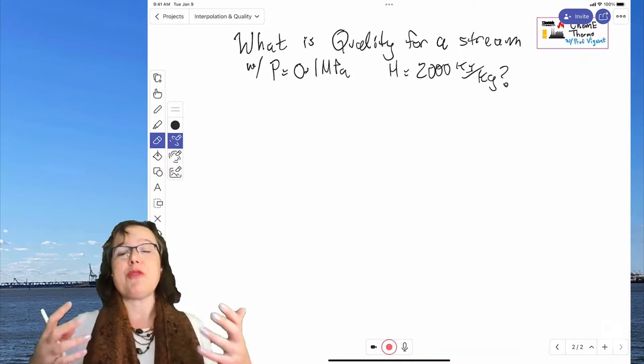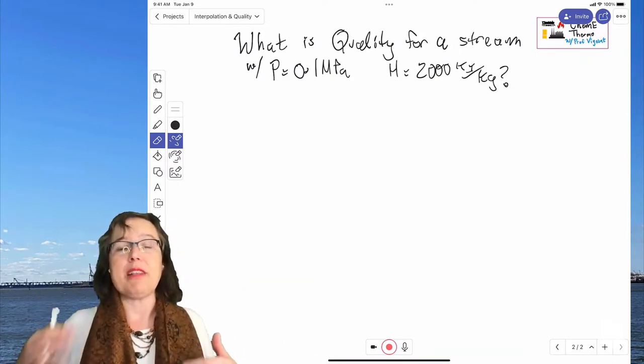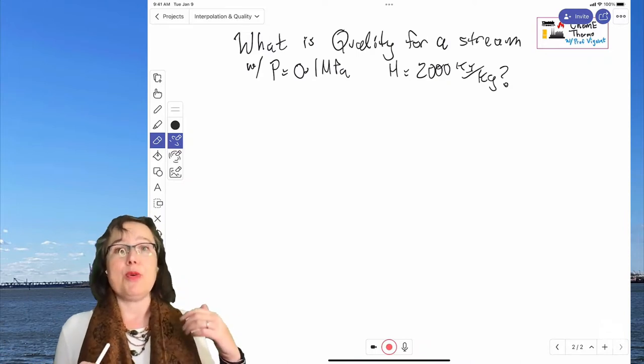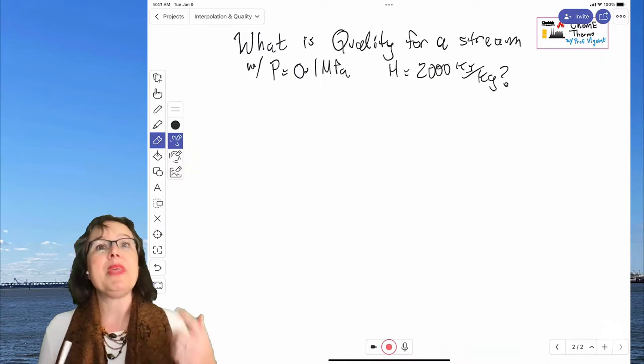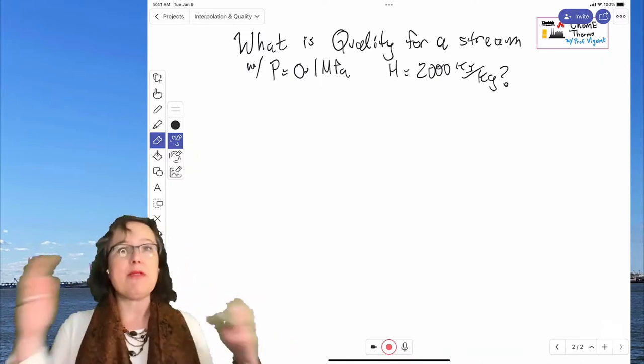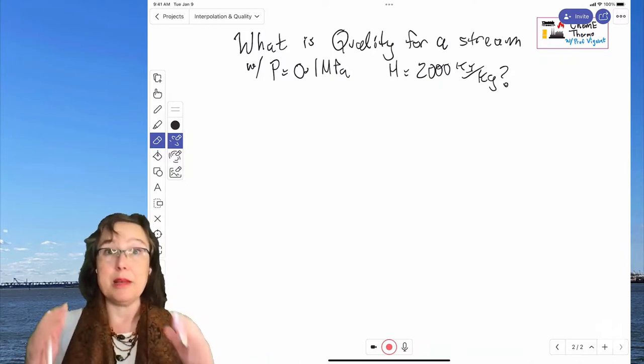So if you have saturated liquid water, it is a quality of zero. And if you have 100% steam, like in our last little problem, that has a quality of one. And then everything else that is saturated steam is somewhere in the middle.